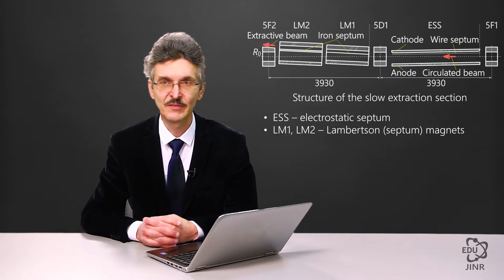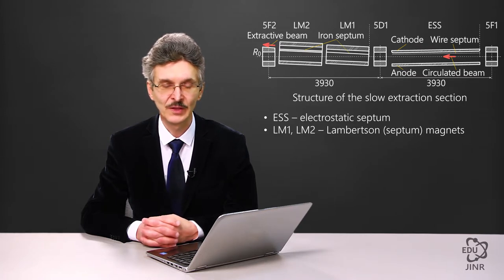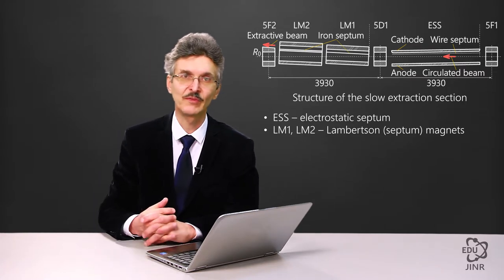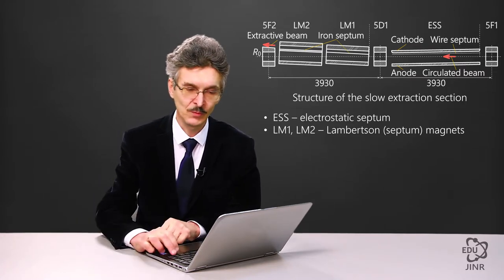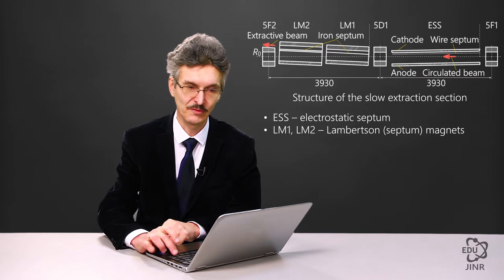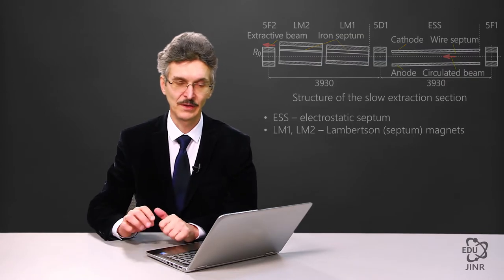The electrostatic septum shifts them into a horizontal position. Next, through a defocusing lens, they get into Lambertson magnets, which vertically extracts the beam from the orbit. This is how beam extraction is done.